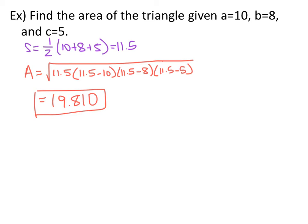s is one-half times the sum of the three sides, so in this case it's 11.5. The area is the square root of s times (s minus a) times (s minus b) times (s minus c). s is 11.5, a is 10, b is 8, and c is 5. Plug that in your calculator, you end up with the area of this triangle is 19.810.